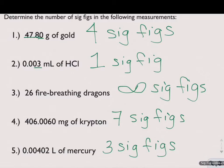Welcome back. You should have determined that number four contains seven sig figs: three non-zero numbers, three zeros between non-zero numbers, and a zero at the end of the number to the right of the decimal — all of these zeros are significant. In number five, you should have determined that it had three sig figs: two non-zero numbers and a zero between two non-zero numbers. The zeros in front are merely placeholders and are not significant.